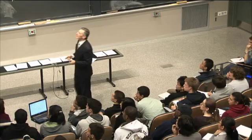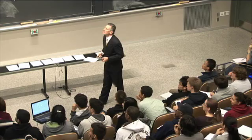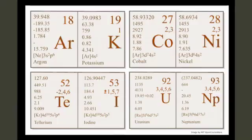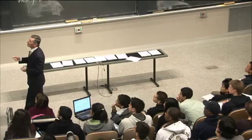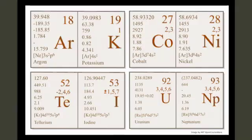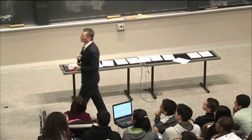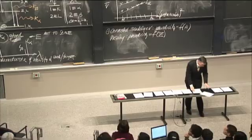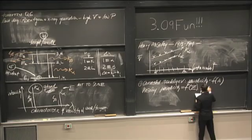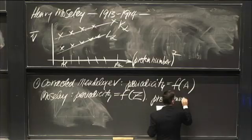Look at the periodic table. Argon has a lower mass than, pardon me, potassium has a lower mass than argon. But no one's going to put potassium underneath neon. Cobalt and nickel: nickel actually weighs less than cobalt. Iodine is lower mass than tellurium, but iodine is a halogen belonging under fluorine, chlorine, and bromine. You're not going to put it under oxygen, sulfur, selenium. So proton number is the atomic number, the identity. That comes from Moseley's work.